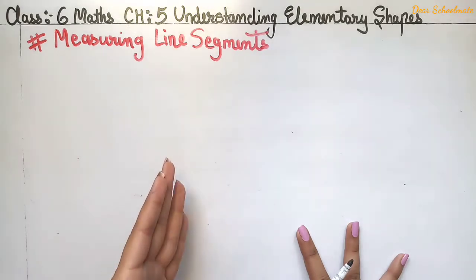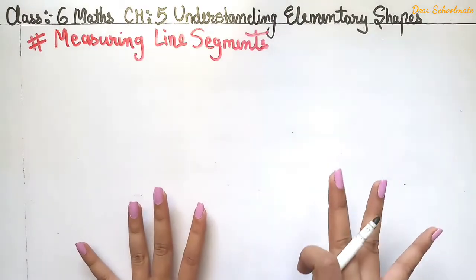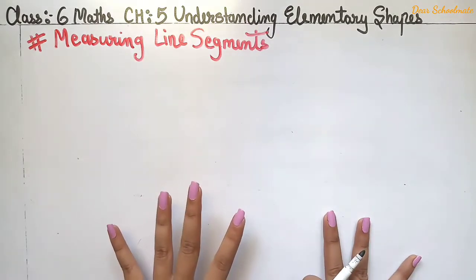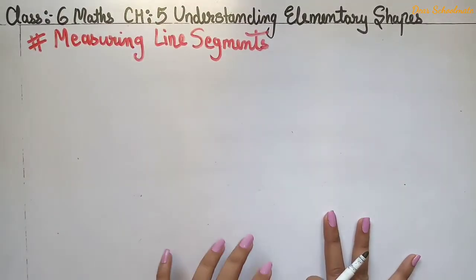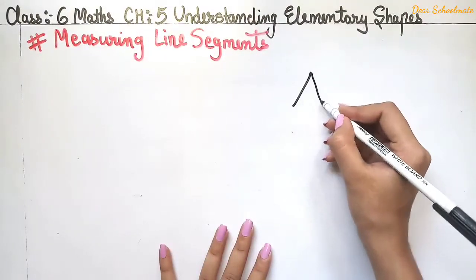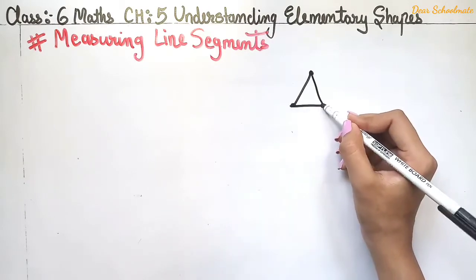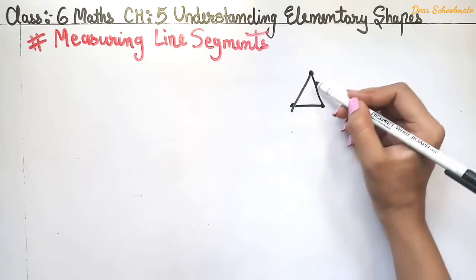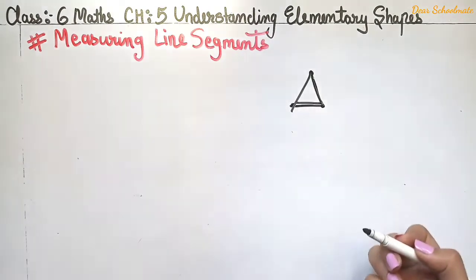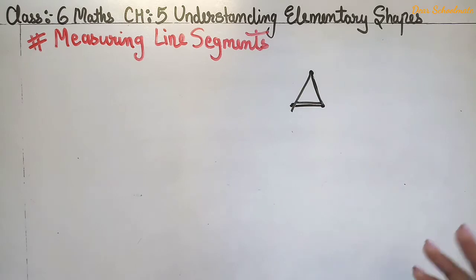Polygons are shapes made of line segments. The smallest polygon is a triangle, which has three sides — it is completely made up of three line segments. A quadrilateral has four sides. So we have learned these things in the last chapter.